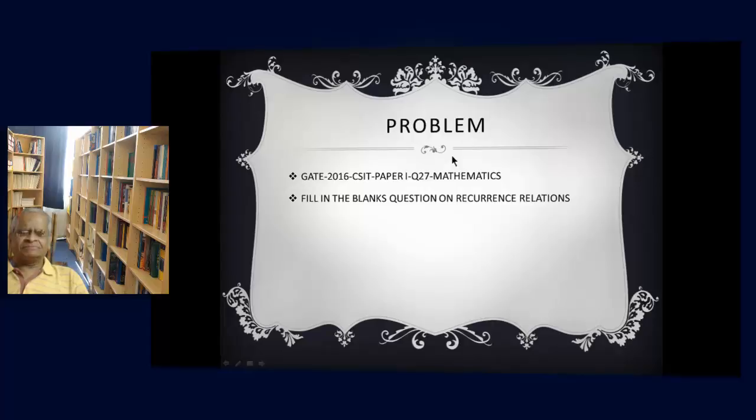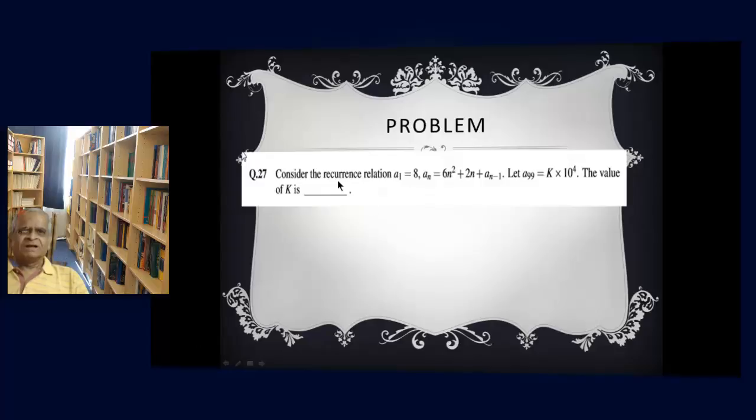Question 27, a fill in the blanks question on Recurrence Relations. Consider the recurrence relation: an is equal to 6n² plus 2n plus an minus 1. We are given that when n equals 1, a1 equals 8. The question is to determine a99. Given that it is a multiple of k to the power of 4, the value of k is to be determined.